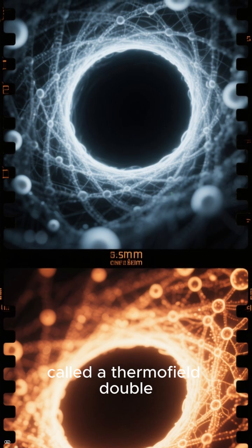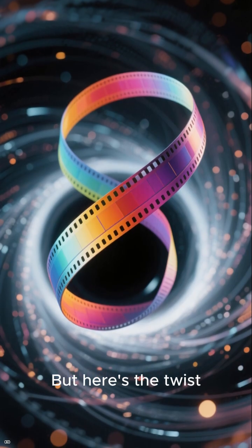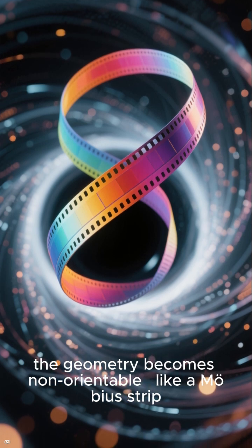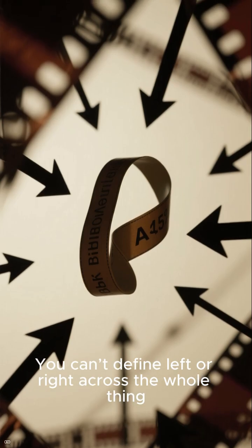But here's the twist: the geometry becomes non-orientable, like a Möbius strip. You can't define left or right across the whole thing.